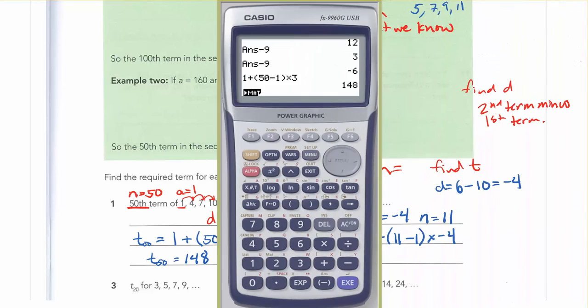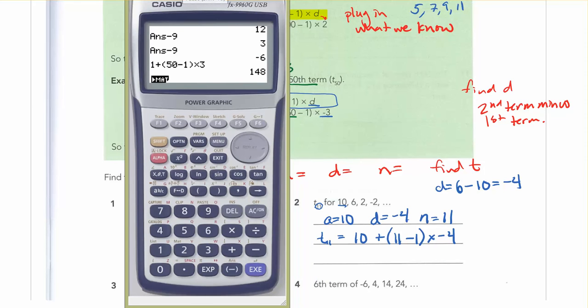And one thing that you can do for yourself, if you want to make things a little bit simpler, is you can kind of simplify some of the stuff in your head if you want. But if it's too much for you, don't worry about it. You can always use the calculator. So 10 plus, this is an example of it. Well, 11 minus 1 is just 10, times negative 4. So I can simplify that and get negative 30.